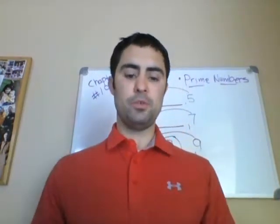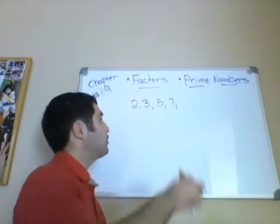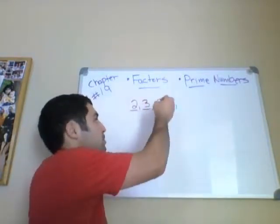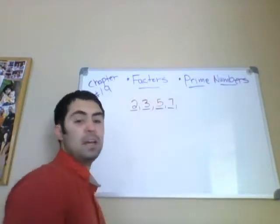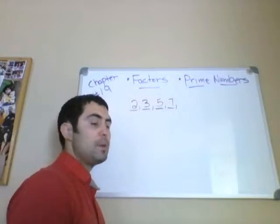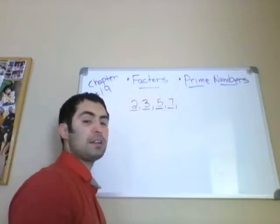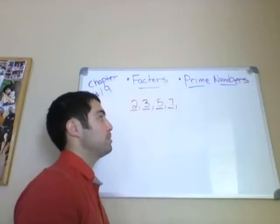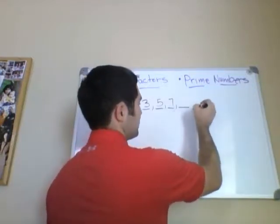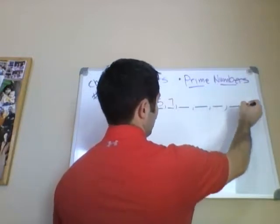I'm going to list some prime numbers quickly. 2 is a prime number, 3 is a prime number, 5 is a prime number, 7. You guys kind of already understand why these are prime numbers — because there aren't any factors that when multiplied together will result in these as a product.